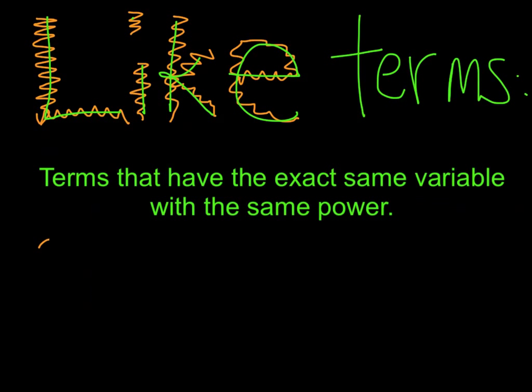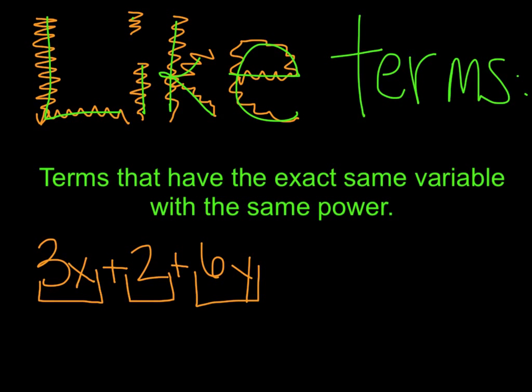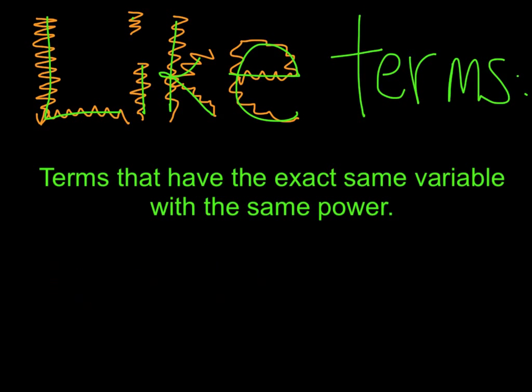Remember when we're looking at an expression like 3x plus 2 plus 6y, the terms are the things separated by some sort of operation sign. So 3x is a term, 2 is a term, and 6y is a term. If we're looking at terms that have the exact same variable with the same power, let's take a look at things like 3x. A like term to that would be 2x, or 10x, or 15x.